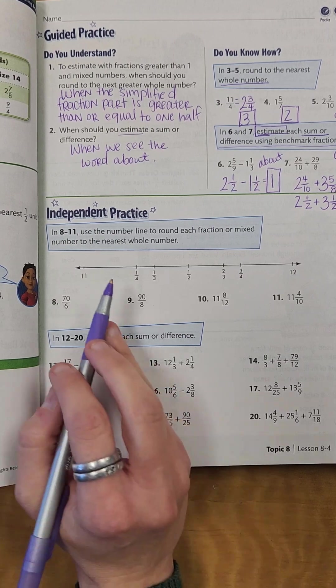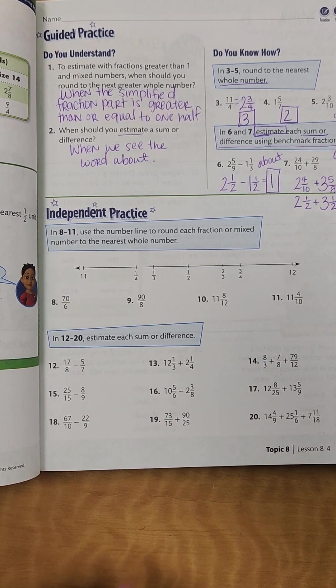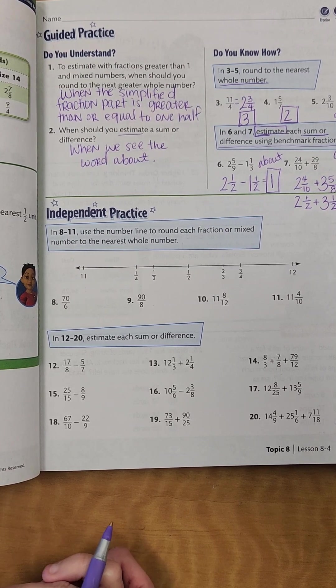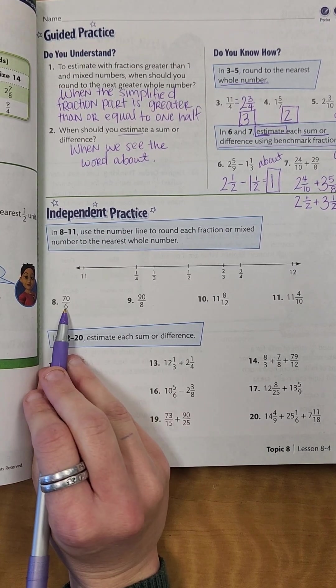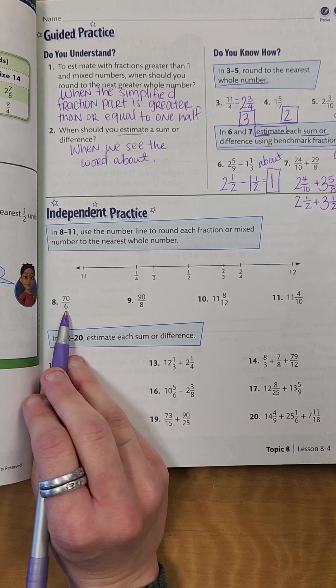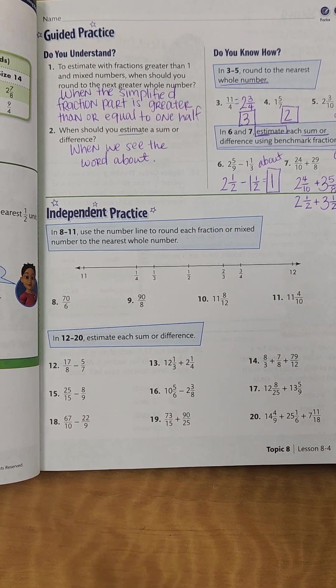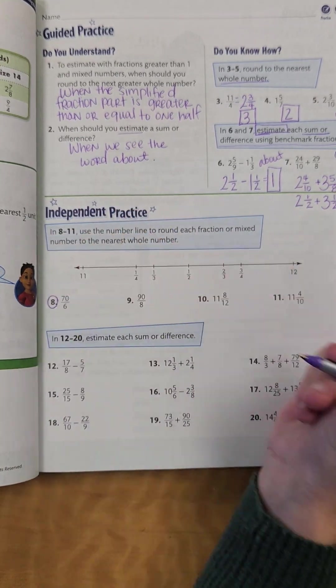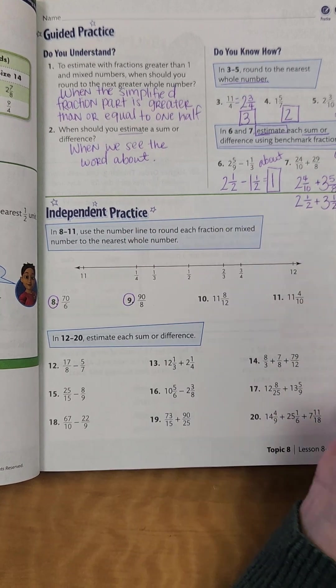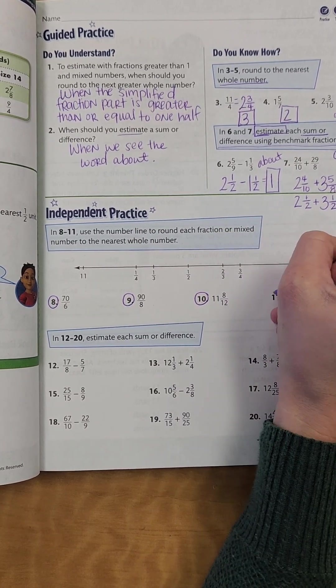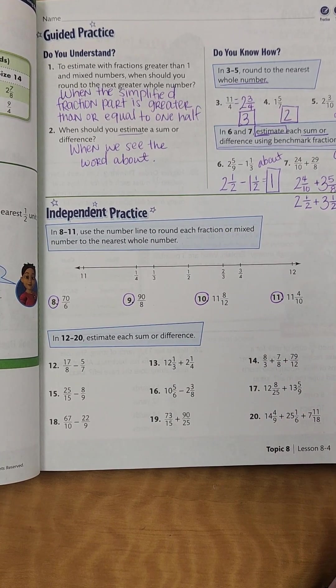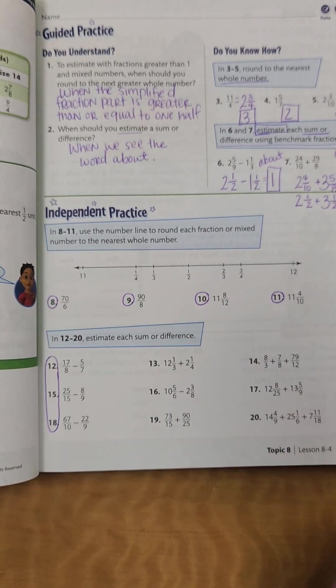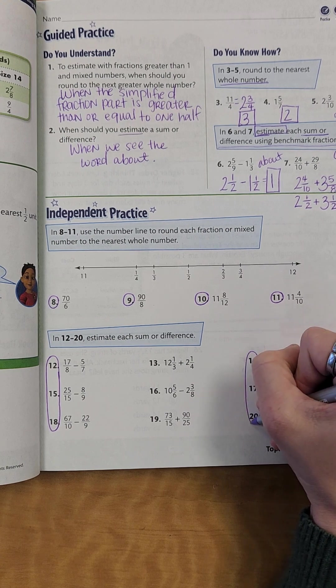So now, this next one, it says, in 8 through 11, use the number line to round each fraction or mixed number to the nearest whole number. So if you see it as an improper fraction, make sure you make it that mixed number and then see what is it closest to. So I want you all to do 8, 9, 10, 11, 12, 15, 18, 14, 17, 20.